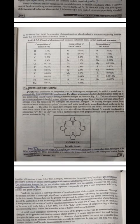Metalloporphyrins: Porphyrins constitute an important class of bio-inorganic compounds in which a metal ion is surrounded by four nitrogens of a porphyrin ring. Porphyrins are macrocyclic tetradentate ligands made up of four pyrrole rings linked together through methine bridges, as shown in figure 5.1.